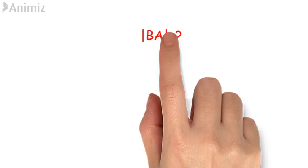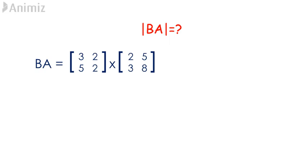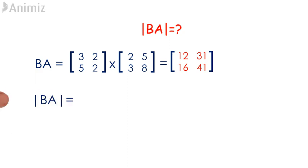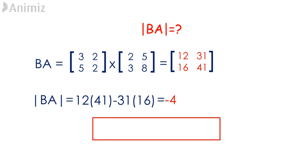In order to find the determinant of BA, we first need to multiply matrix B and matrix A together. The multiplication of these two matrices gives us a 2 by 2 matrix containing the elements 12, 31, 16, 41. Now let's get its determinant using AD minus BC, which is 12 times 41 minus 31 times 16. This gives us the value of the determinant of BA to be negative 4. Do take note that the determinant of BA obtained is equivalent to that of AB obtained in the earlier part of this question.